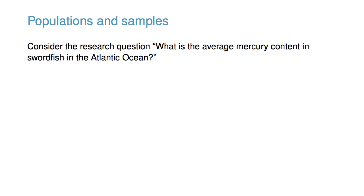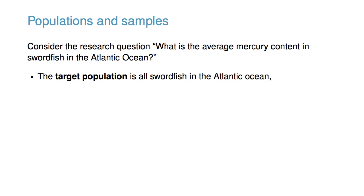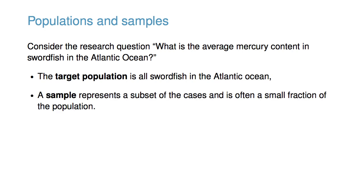Consider the research question: what is the average mercury content in swordfish in the Atlantic Ocean? The target population is all swordfish in the Atlantic Ocean, and each fish represents a case. A sample represents a subset of the cases and is often a small fraction of the population. For instance, 60 swordfish in the population might be selected, and this sample data may be used to provide an estimate of the population average and answer the research question.